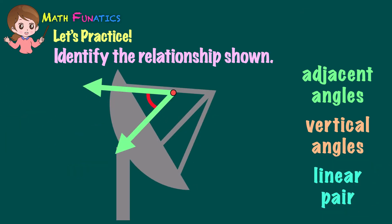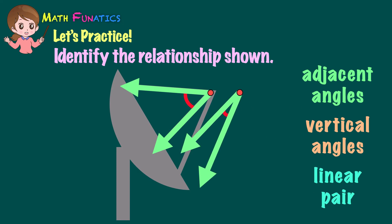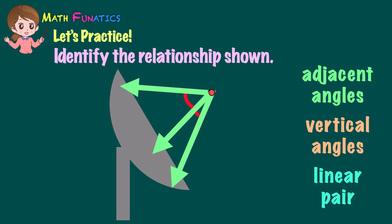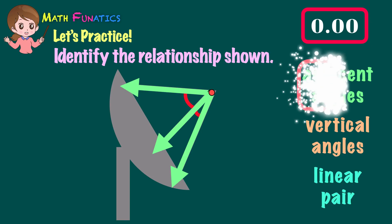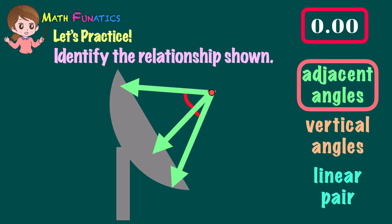This time, what is the relationship shown by the angles of the satellite dish? What's your answer? You're right — they are adjacent angles.